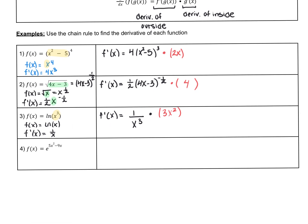The last one is my e to the x function. We know the derivative of e to the x is just e to the x. The same applies here — the derivative of e to any power is that same expression. But the chain rule tells us to multiply by the derivative of the inside, which is the power 5x squared minus 9x. By the power rule, the derivative of 5x squared is 10x, and the derivative of negative 9x is negative 9. So f prime of x equals e^(5x²-9x) · (10x - 9).